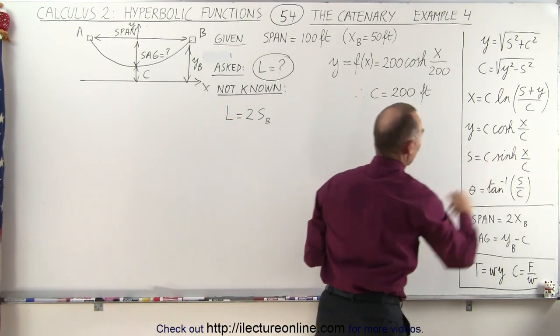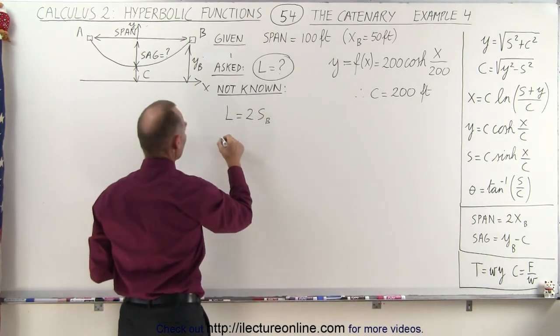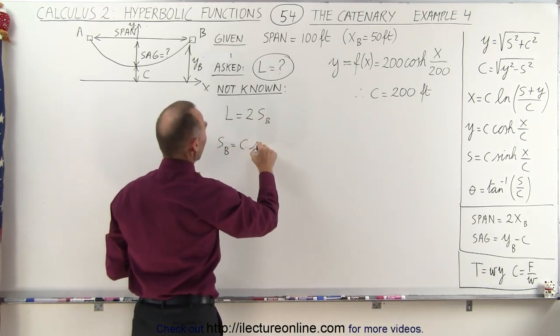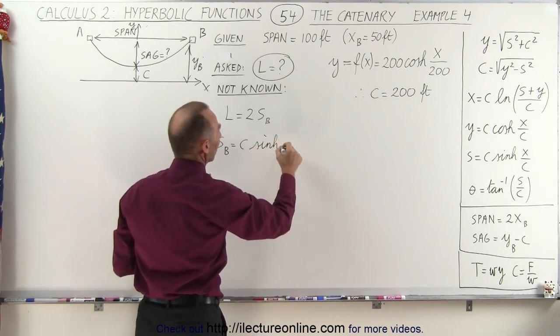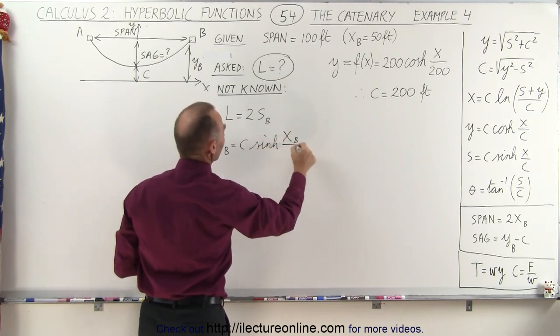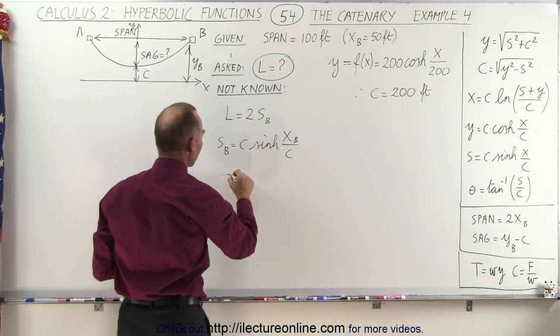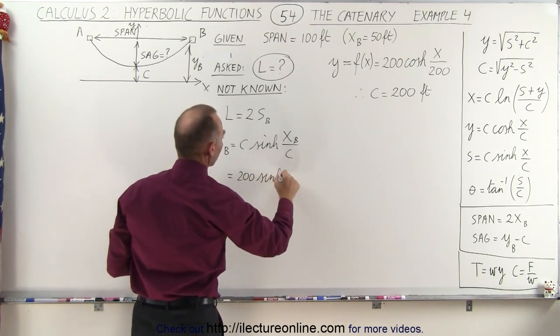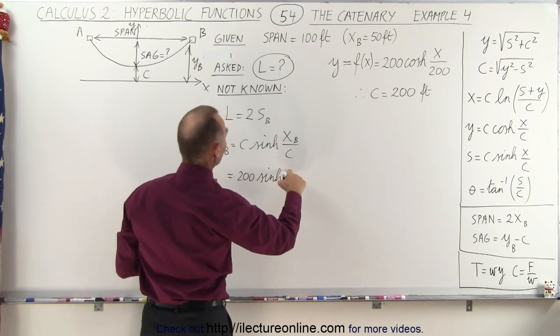Twice that gives us the full length of the cable, which means we're trying to find s, and s is defined by this function right here. So we can say that s sub b is equal to c times the hyperbolic sine of x at b divided by c.